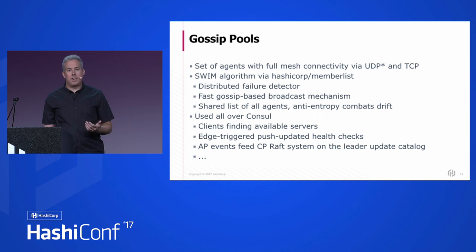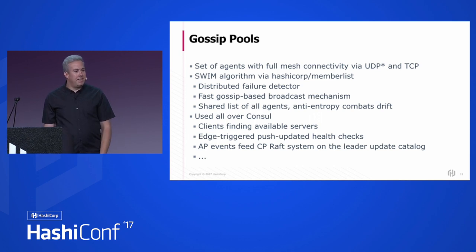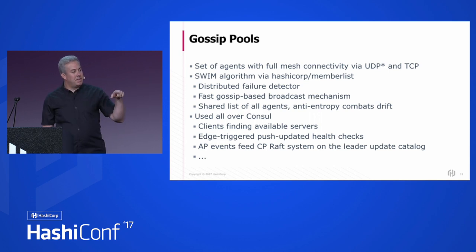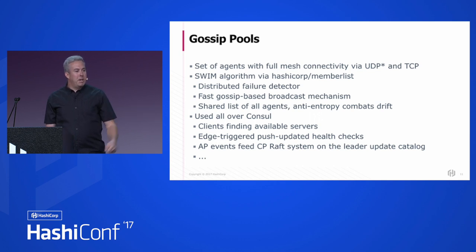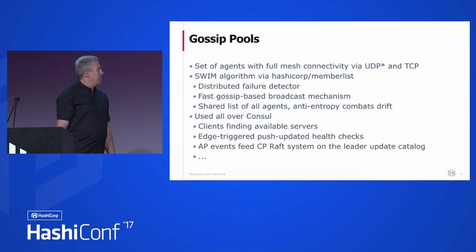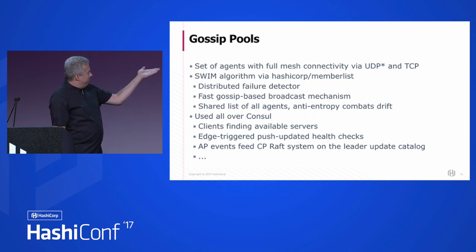The only problem is that if a node just dies, it's not going to tell you that after it died. By having a distributed failure detector, you can close that loop — that node stopped giving me updates, and I learned this node is down from the algorithm, so I can mark the health checks as failed. This lets us scale health checking in a really huge way by exploiting the properties of the gossip system.